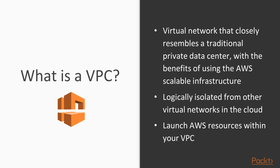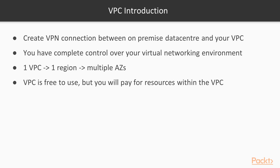What is a VPC? A VPC is a virtual network that closely resembles the traditional private data center, with the benefits of using the AWS scalable infrastructure. It is logically isolated from other virtual networks in the cloud, and you can launch your AWS resources within your VPC. You can also create a VPN connection between your on-premise data center and your VPC to extend your network, and thus create a hybrid type of cloud.